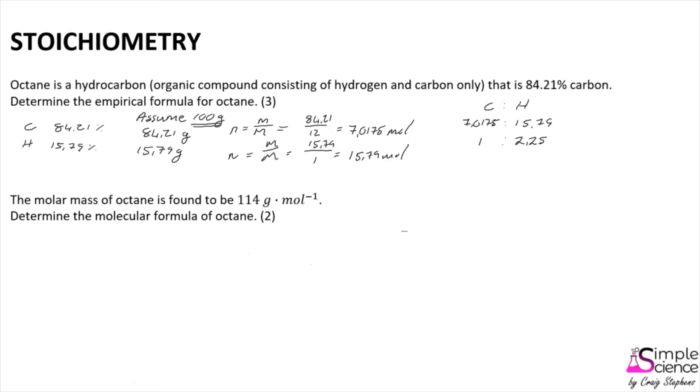This is not particularly useful since we cannot have 0.25 of a hydrogen atom. But what we can do is multiply both of these by 4 to see that the actual ratio is then a ratio of 4 to 9, which gives us the empirical formula C4H9.